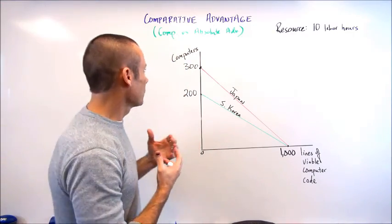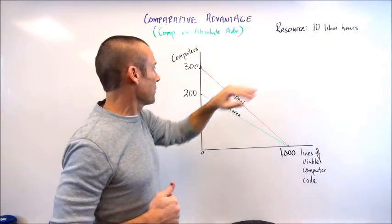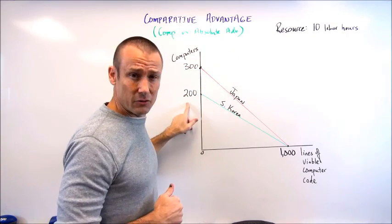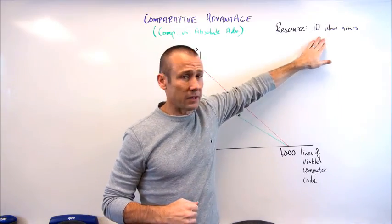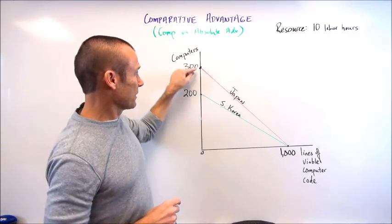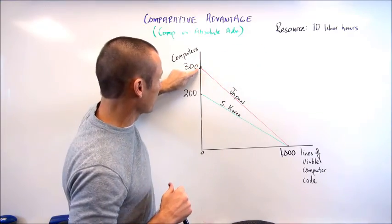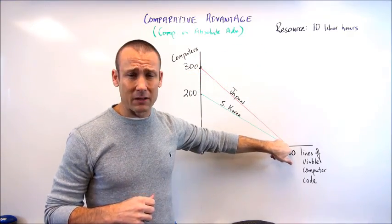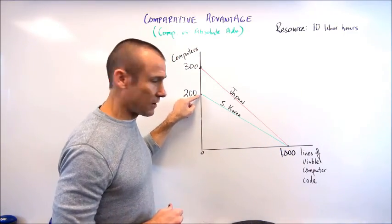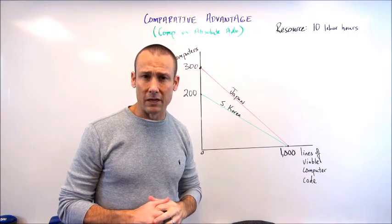We're given 10 labor hours. If Japan is given 10 labor hours, they can make 300 computers. With 10 labor hours, South Korea can make 200 computers. And with 10 labor hours, they could both make 1000 lines of code. When I say this point, this is if Japan allocated all of those labor hours to computers, and this point is if Japan allocated all those labor hours to lines of viable code. Same with South Korea — here they allocated all labor hours to computers, and here all labor hours to lines of code.